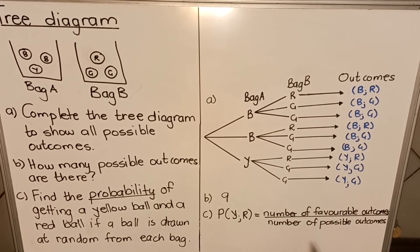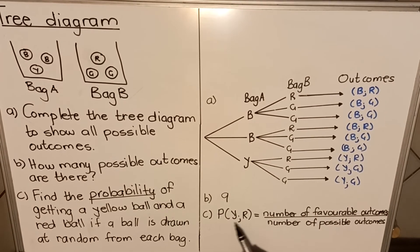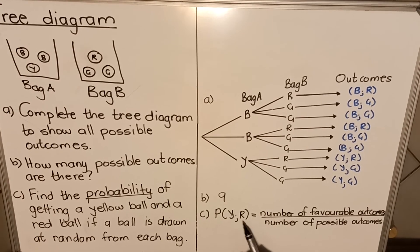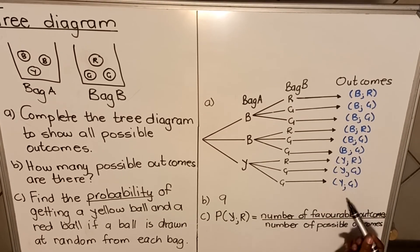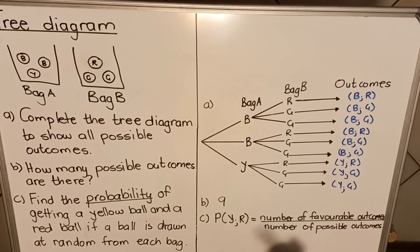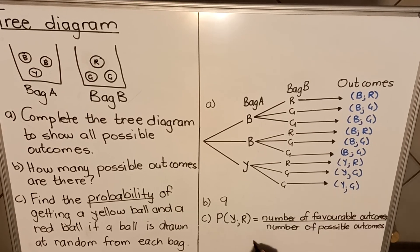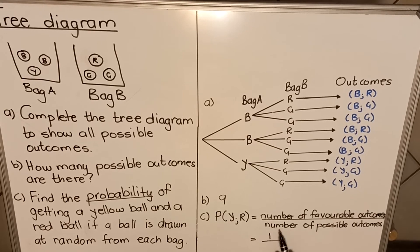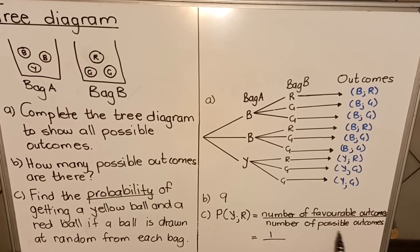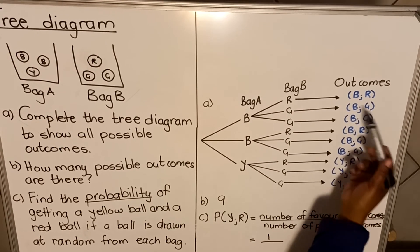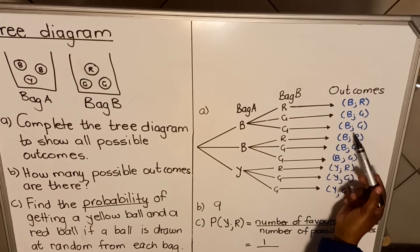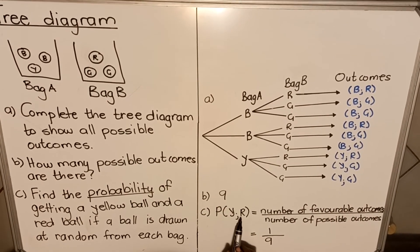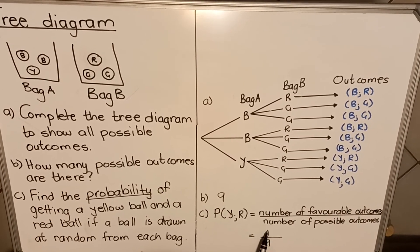In this question, the favorable outcome is yellow and red. How many yellow-and-red combinations do I have from my outcomes? It's only one. So the number of favorable outcomes is one. The total number of possible outcomes — counting them: one, two, three, four, five, six, seven, eight, nine. So the probability of yellow and red is one out of nine.